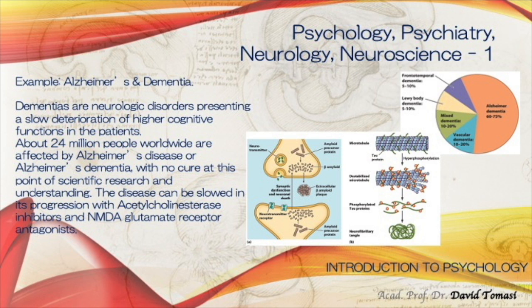What else do we know about Alzheimer's? Acetylcholinesterase inhibitors and NMDA glutamate receptor antagonists sometimes slow the progression of the disease. This is one example where we have very clear neurological and neuroscientific understanding of the problem, and yet this does not necessarily lead to a complete cure. That's precisely why this disorder will have to be considered from a social, philosophical, personal, emotional, and psychological perspective.